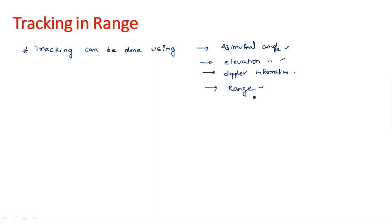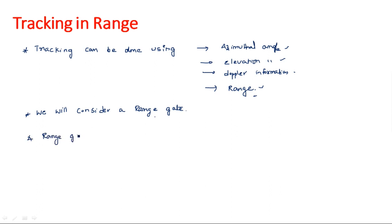In this concept I am going to explain how tracking of a particular target can be done with respect to range. What we have to do is we will consider a range gate. The purpose of the range gate is to divide the entire received echo signal into two parts. The range gate internally has two parts.